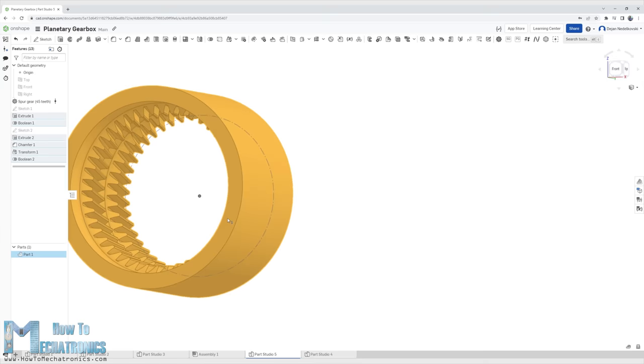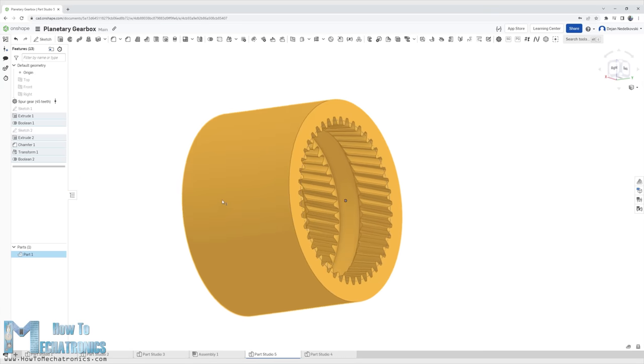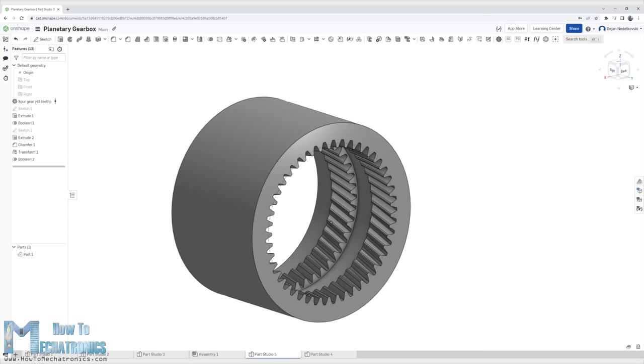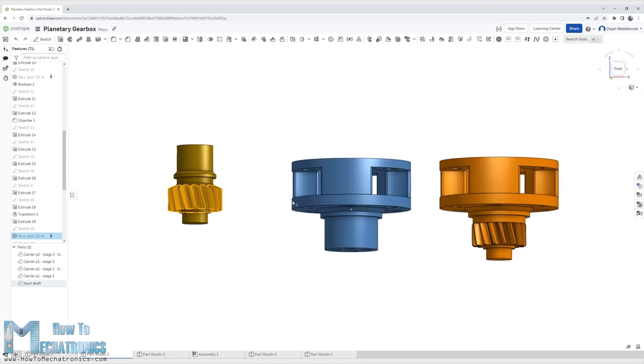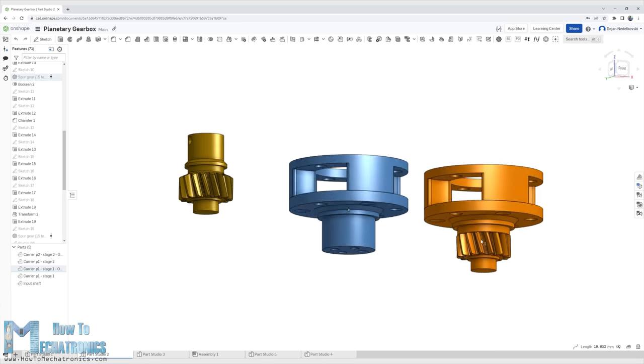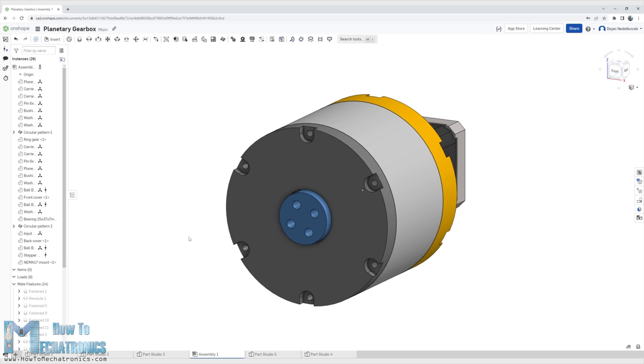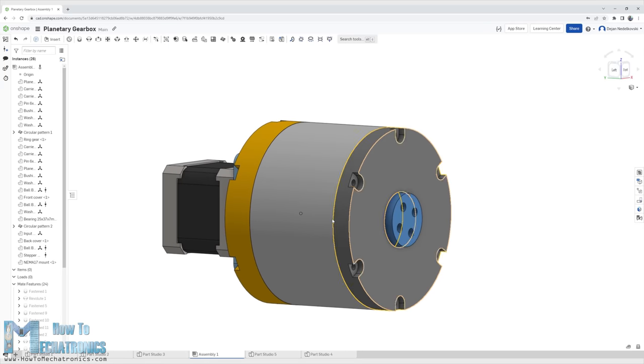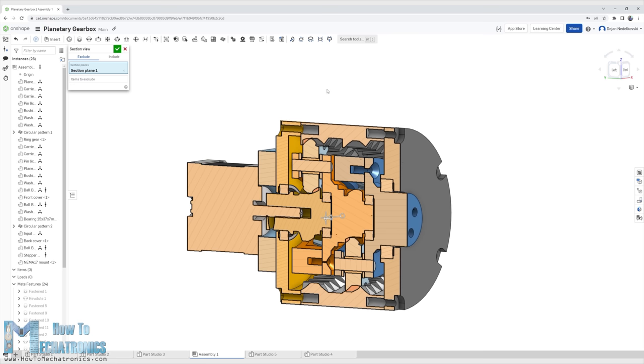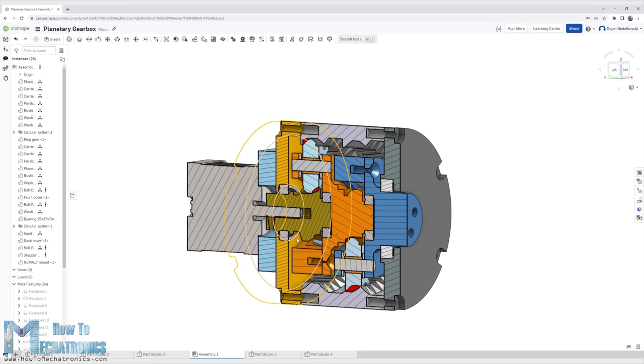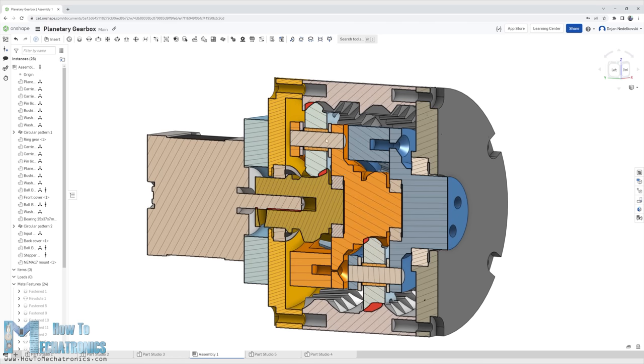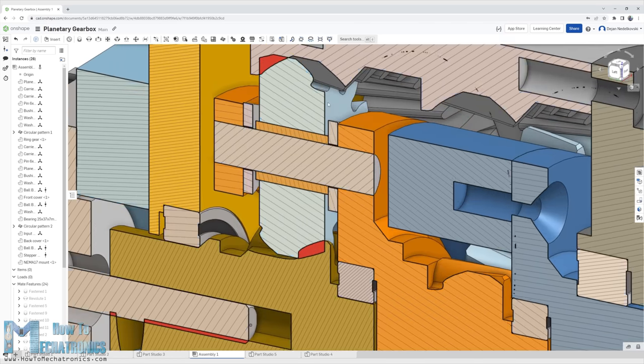I found this 3D modeling method, the boolean function that OnShape offers quite versatile. With the same method I designed the planet carriers and the input shaft. The design of the whole gearbox was actually based on the shafts and the bearings that I already had at home from my previous projects, the cycloidal drives.